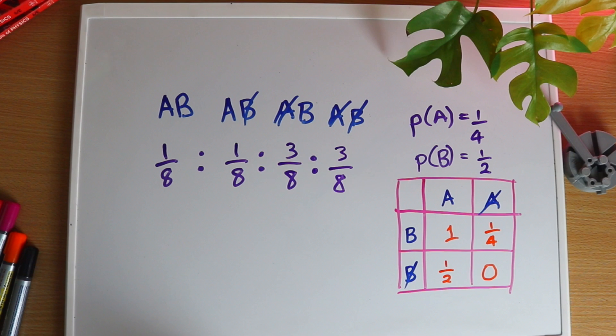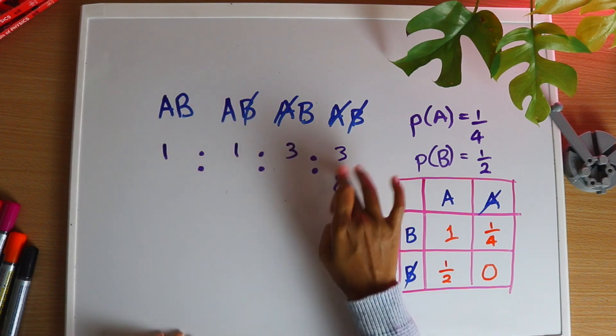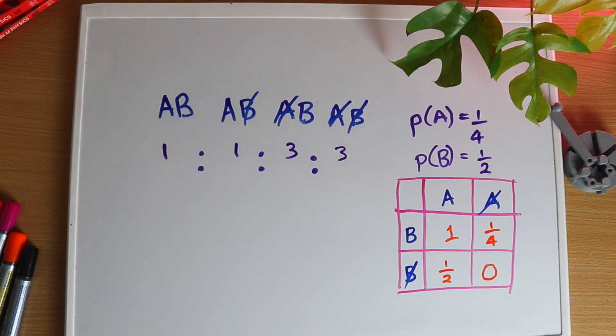I've written these probabilities as a ratio because all I really care about is how likely each of these is compared to the others. Another way to think of it is this. For every eight people in this world, one will have A and B, one will have just A, three will have just B, and three will have neither.